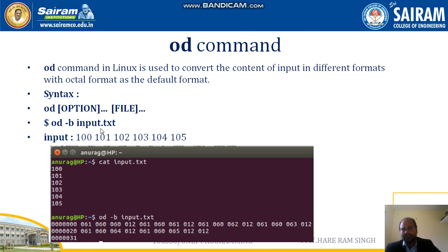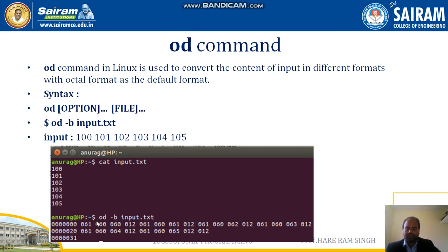For example, 'od -b input.txt' converts input.txt to octal byte format. Suppose input.txt contains values 100, 101, 102, 103, 104 — you can verify the contents using 'cat input.txt'. Then running 'od -b input.txt' converts those contents into octal form for display.